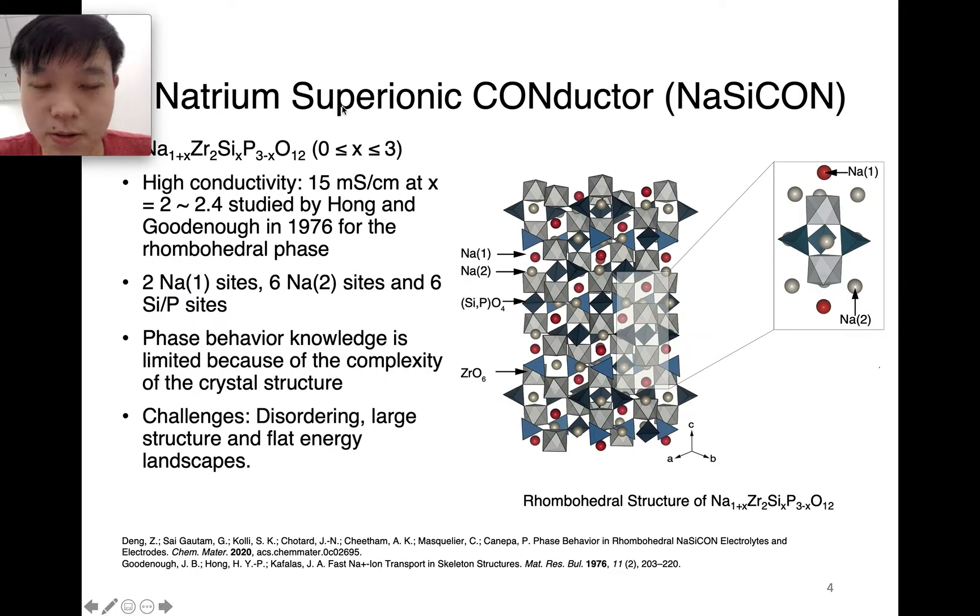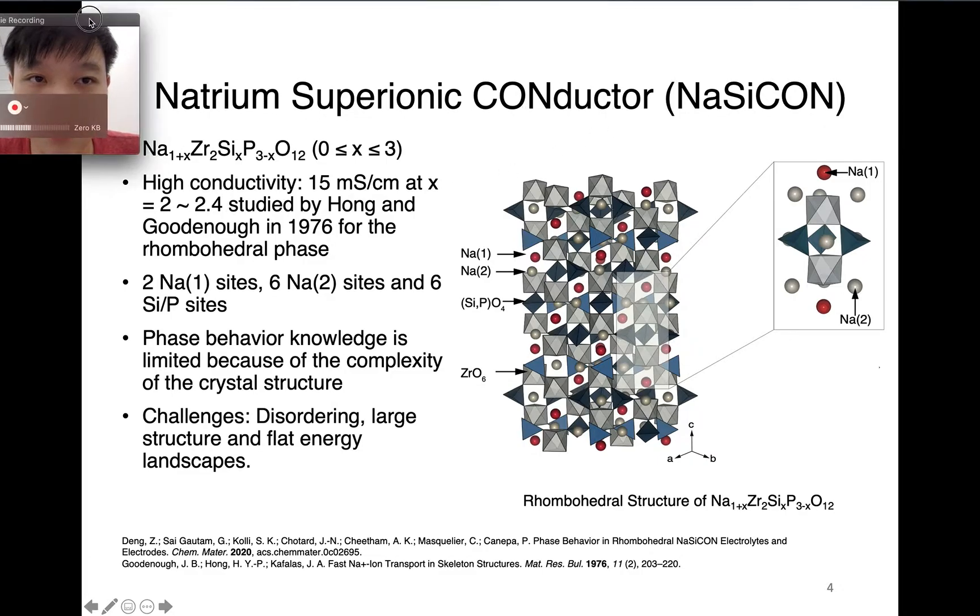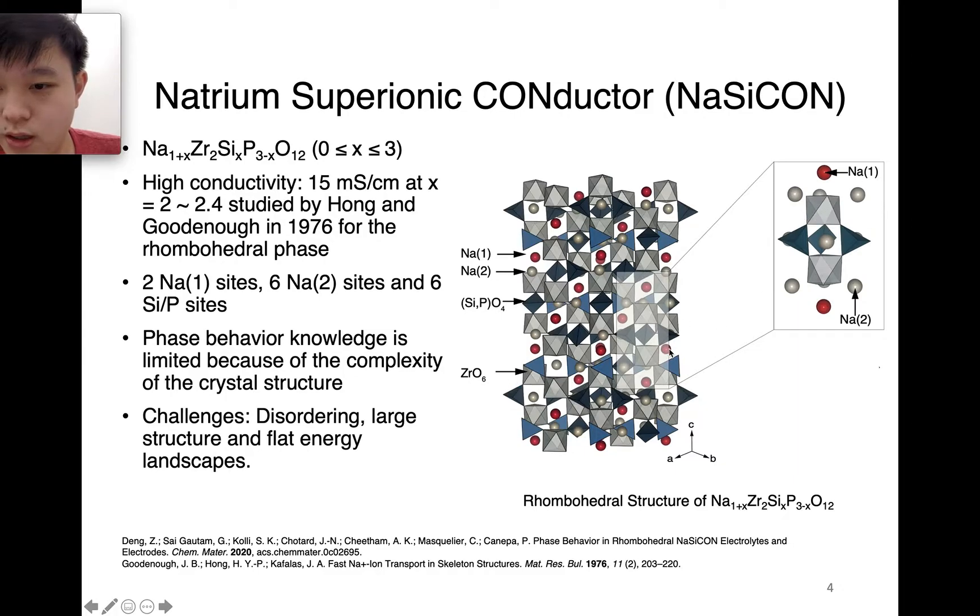What is NaSiCON structure? The full name is natrium superionic conductor, which has a formula of Na_{1+x}Zr_{2}Si_{x}P_{3-x}O_{12}. As you can see, it's very complex, containing sodium, zirconium, silicon, phosphorus, and oxygen. It is constructed by this so-called lantern unit. The lantern unit is composed of two zirconium oxide octahedra and two silicon or phosphorus tetrahedra. There are eight sodium sites nearby. Two of them are called sodium 1 sites, which sit between the two lantern units, and there are also six sodium 2 sites sitting around this lantern unit.